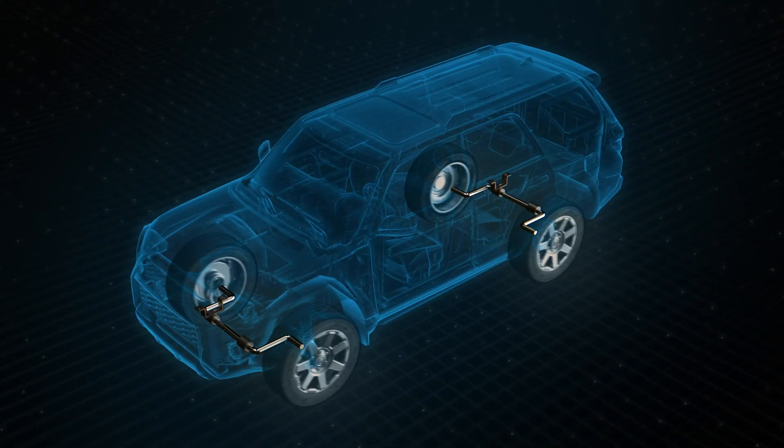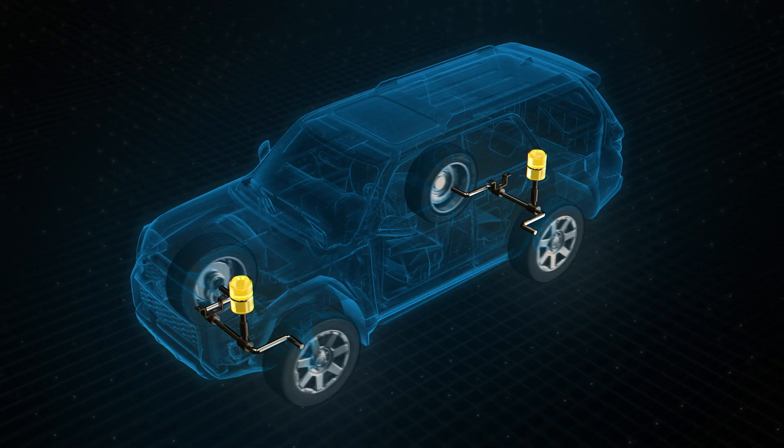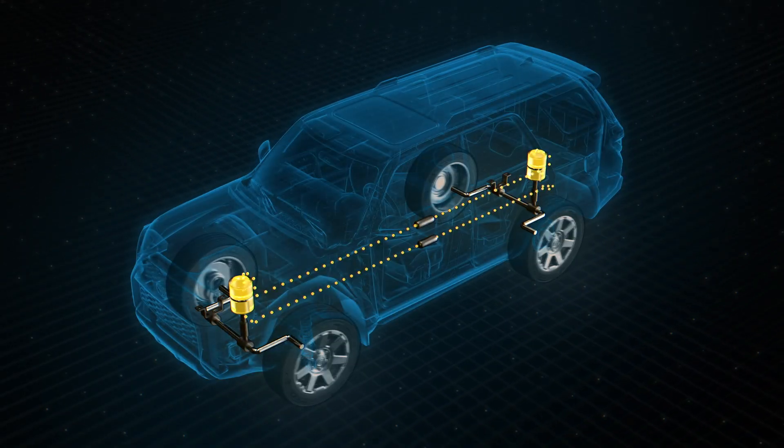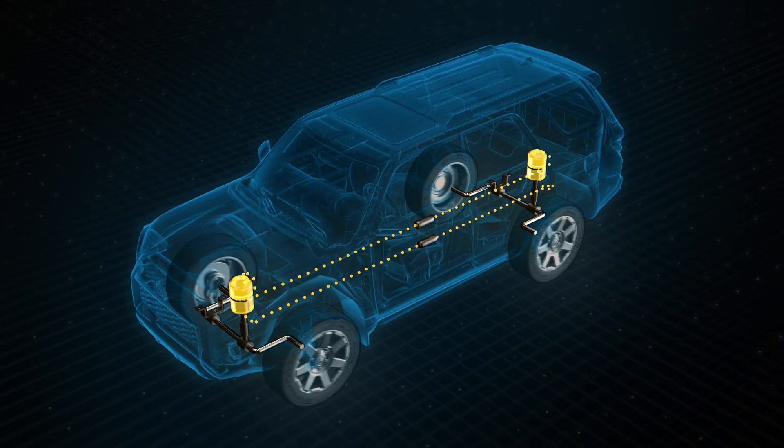KDSS solves this by attaching hydraulic cylinders to the front and rear stabilizer bars, and then connecting those cylinders to each other with two-way piping. This way, both stabilizer bars can now be controlled electronically through this hydraulic circuit.